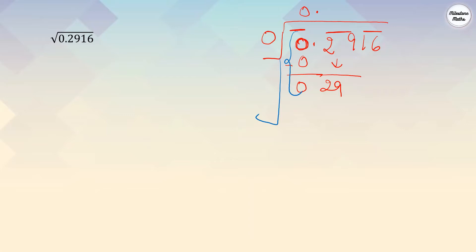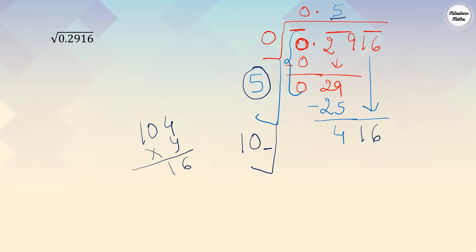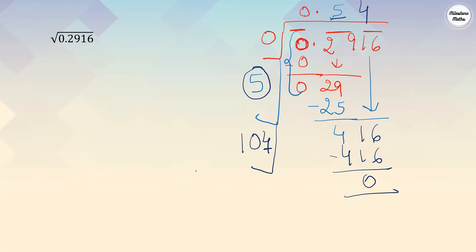For 29: 4×4=16, 5×5=25, 6×6=36 which is bigger. So we take 5. 0+0=0, so 5×5=25. Subtract: 29−25=4. Bring down the next pair 16, giving 416. For the next divisor: 5+5=10. Try digit 4: 104×4=416. We got it exactly. So 104×4=416, remainder 0. The square root of 0.2916 is 0.54.